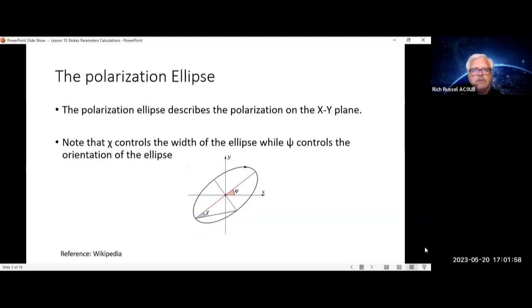The polarization ellipse describes the polarization on the x-y plane. Note that chi controls the width of the ellipse, while psi controls the orientation of the ellipse.